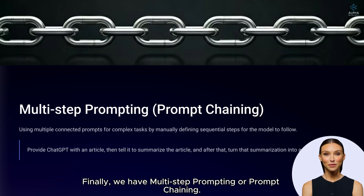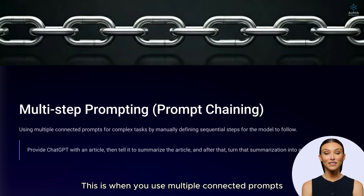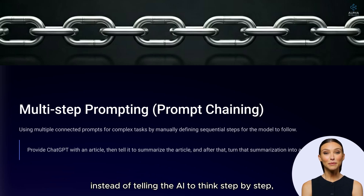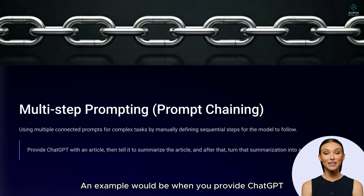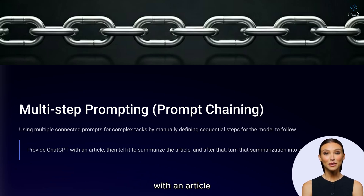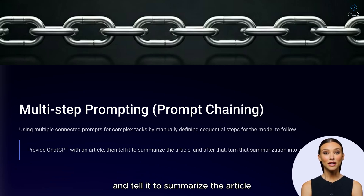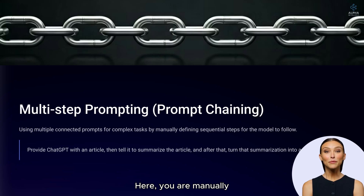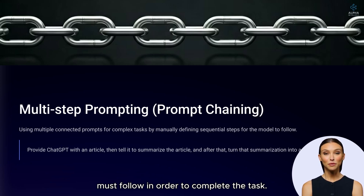Finally, we have multi-step prompting, or prompt chaining. This is when you use multiple connected prompts for complex tasks. This sounds like chain-of-thought prompting, but here, instead of telling the AI to think step-by-step, you are assigning the steps yourself. An example would be providing ChatGPT with an article, telling it to summarize the article, and then turn that summarization into a tweet. Here you are manually defining two sequential steps the model must follow to complete the task.